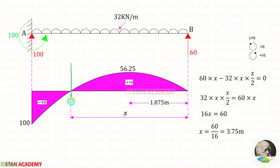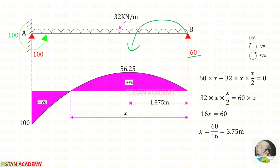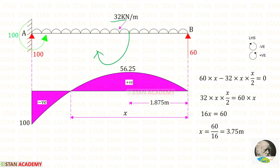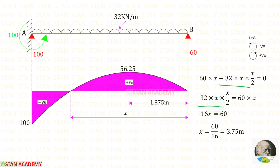Making a section at the point of contraflexure at a distance X from point B, we find the bending moment at this point. RB acts anticlockwise — positive — with distance X; UDL acts clockwise — negative — multiplied with distance and distance by 2. Taking the UDL term to the other side as positive, eliminating X and 2 gives 16. Finally X = 3.75 meters.